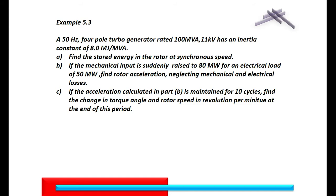Part C is based on Part B. If the acceleration calculated in Part B is maintained — that is, you are raising the input of the machine to 80 MW — and that is maintained for 10 cycles, then we are asked to find the change in the torque angle and the rotor speed in RPM at the end of this period.